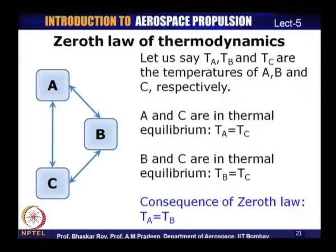Three different bodies A, B, and C have temperatures TA, TB, and TC. If body A and C are in thermal equilibrium (TA = TC) and body B and C are in thermal equilibrium (TB = TC), then as a consequence of the zeroth law, body A should also be in thermal equilibrium with body B — that is, TA = TB. The zeroth law helps explain thermal equilibrium between these three bodies.